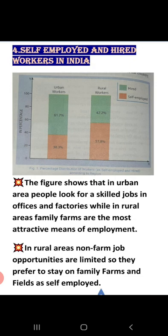In urban areas, hired workers are 61.7% and self-employed are 38.3%. In rural areas, hired workers are 42.2% and self-employed are 57.8%. This shows that in urban areas we have skilled jobs in offices and factories, but in rural areas the most attractive means of employment is agriculture. Very few places in rural areas have non-farm activities such as animal husbandry, fishery, and horticulture.